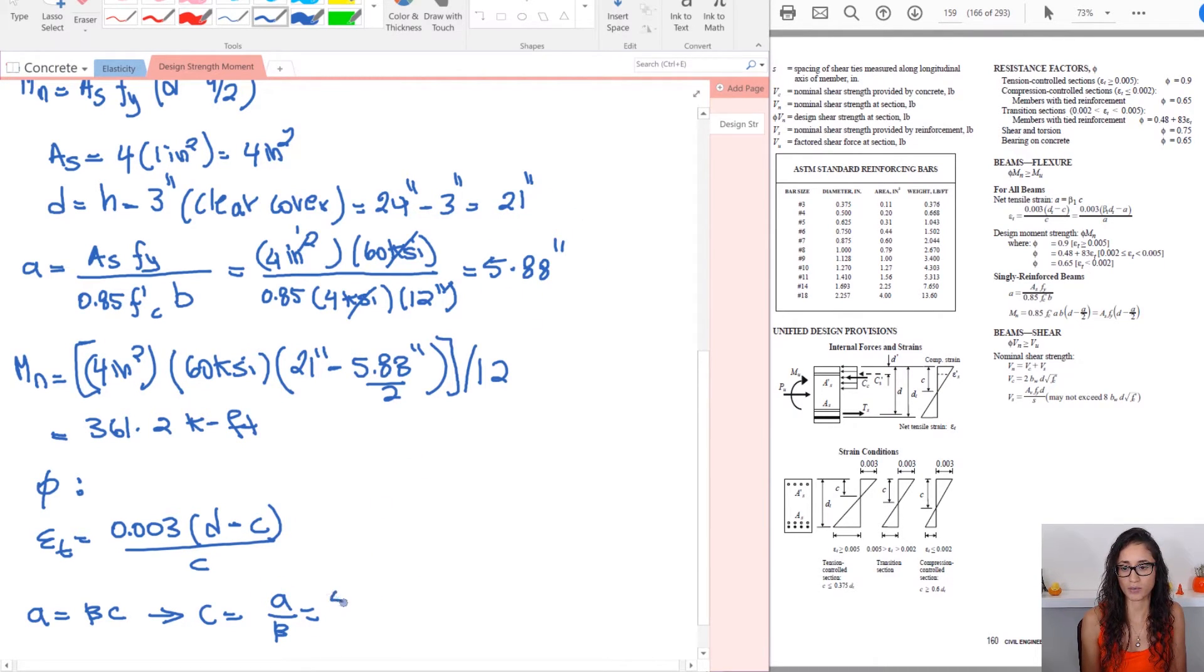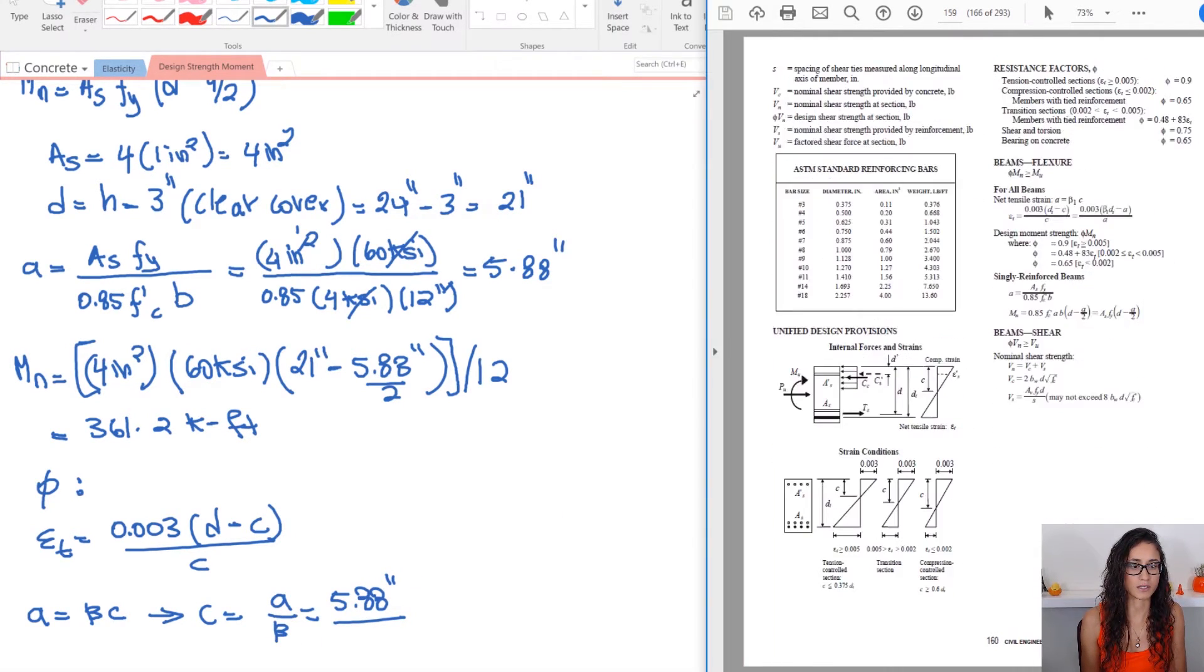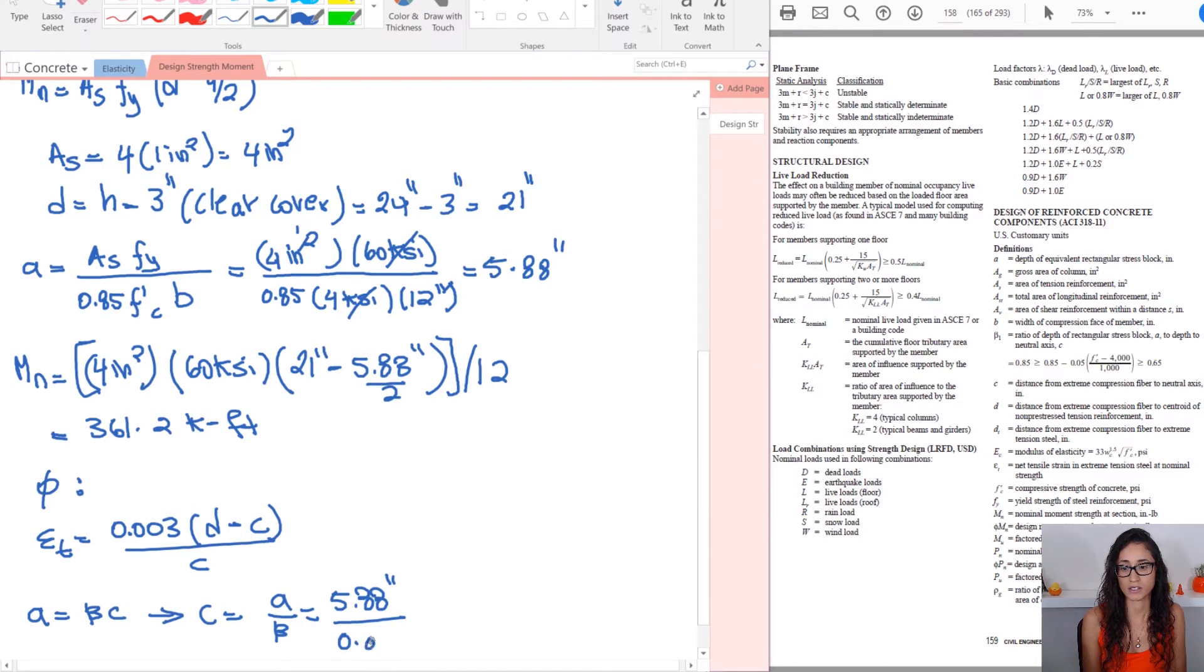So I have A is equal to beta times C. You just rewrite the equation. C is equal to A over beta. A is given, we calculated it, which is 5.88. And then beta, you can actually find it in the definitions. Right here, if you look for it, it's the ratio of the depth of the rectangular stress block to the depth to the neutral axis. And you can just calculate it using this equation. So I'm not going to write the equation because it's really simple. I have 4,000, which is F prime C minus 4,000. That's 0, 0 times 0.05. Again, it's 0. So I have 0.85. So my beta is going to be 0.85.